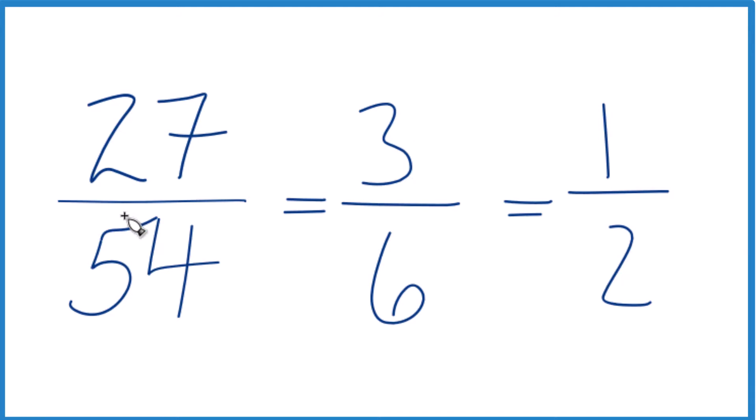In all of these fractions, they're equivalent. They have the same value. If you divide 27 by 54 or 3 by 6 or 1 by 2, you're going to get 0.5. It's just that this is simplified.